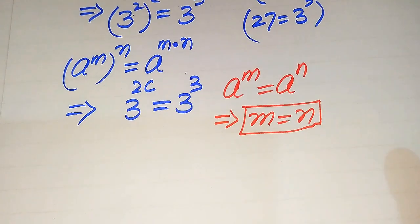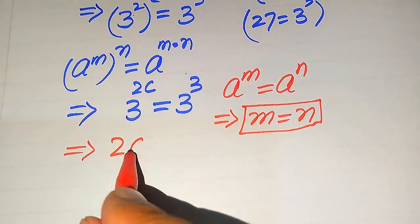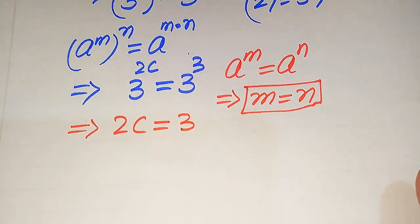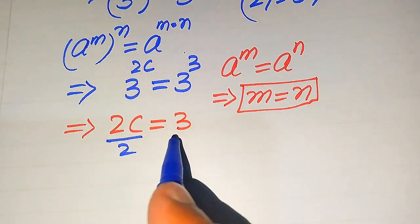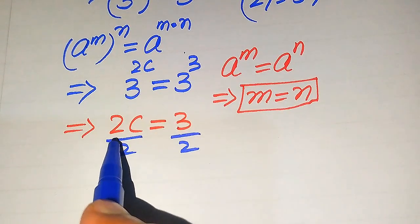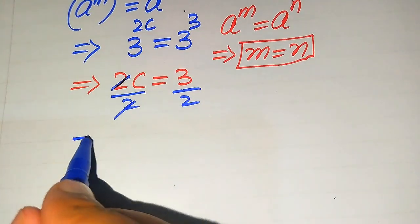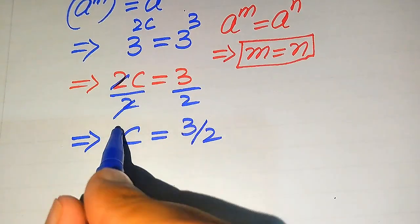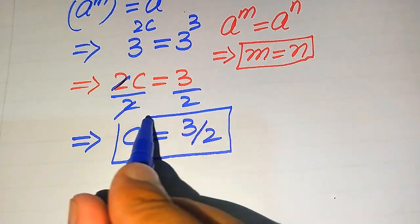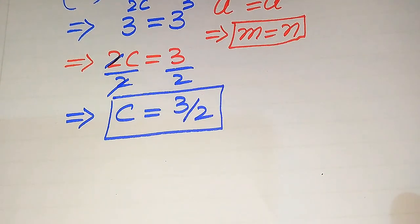According to this rule, we equate the two exponents and it becomes 2C equals 3. Because we are solving for C, we divide both sides by 2 to remove the 2 from the left hand side. The 2 cancels out and we get C equals 3 divided by 2. This is the first value of C, and we get only one root of the given equation.